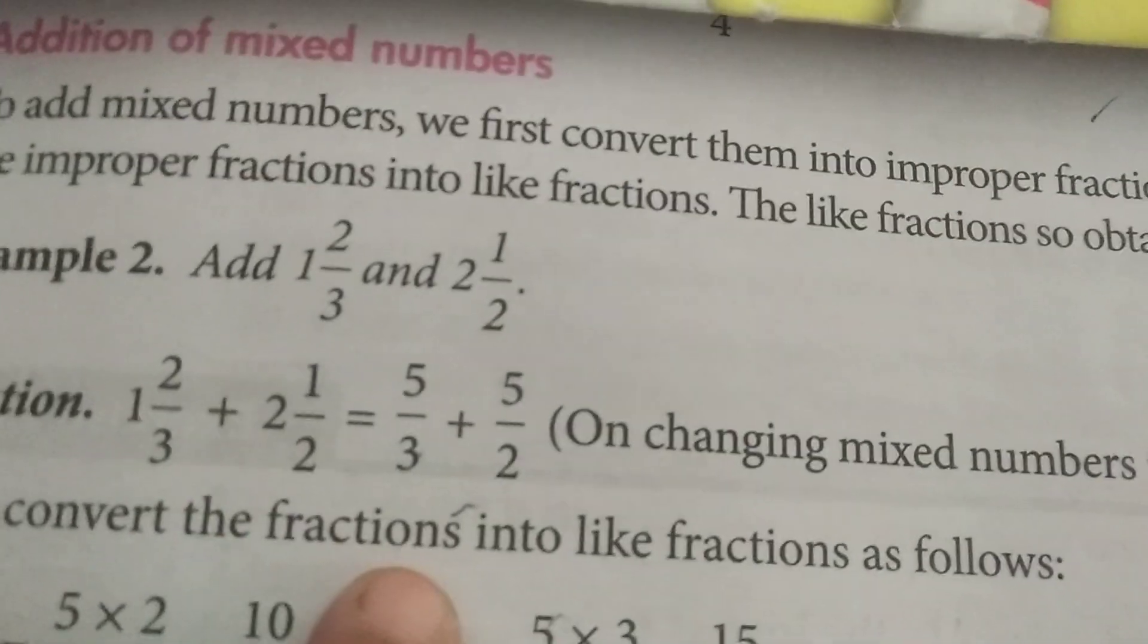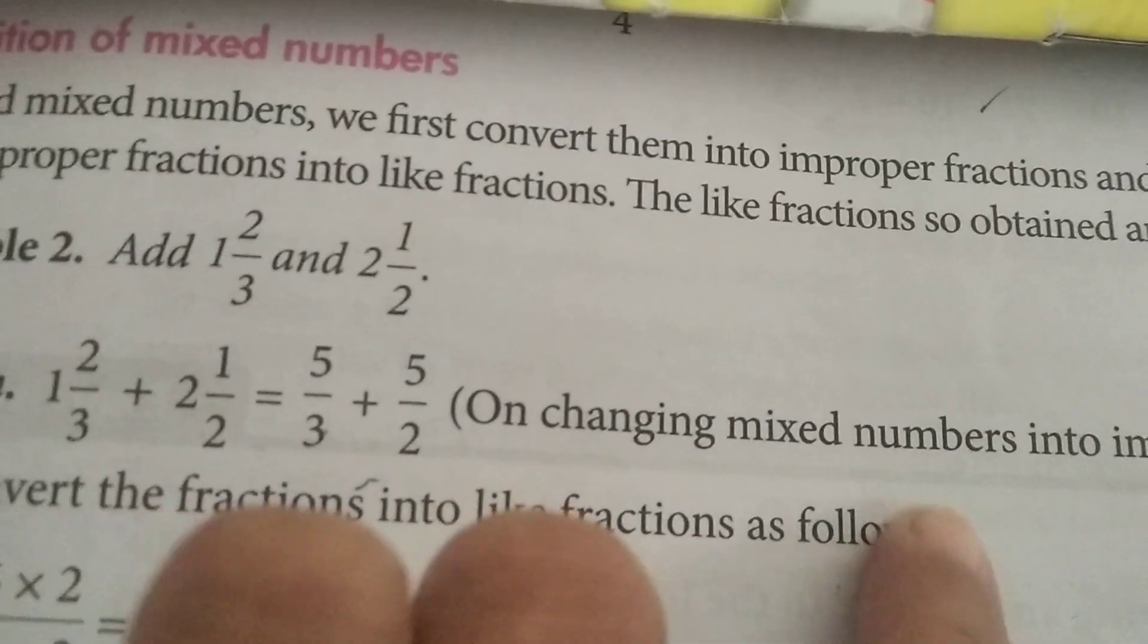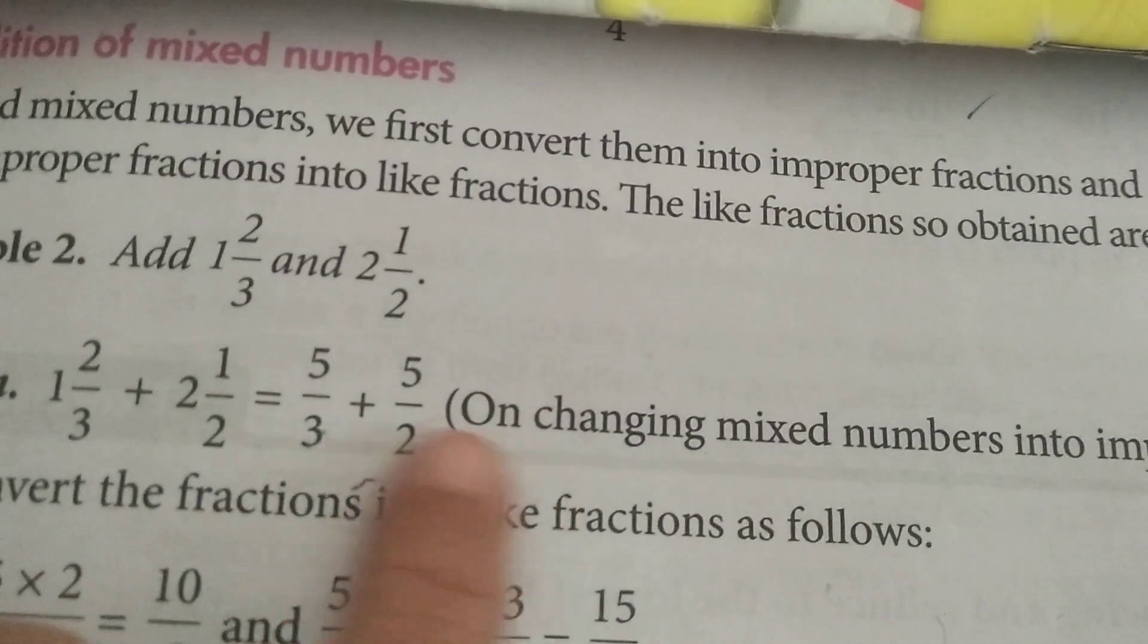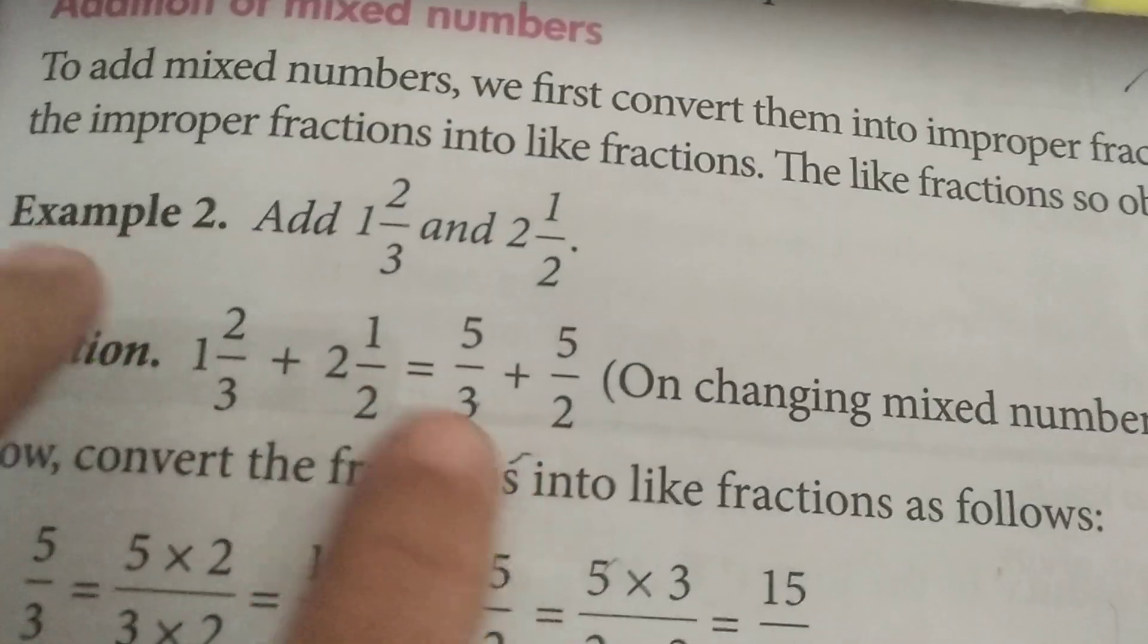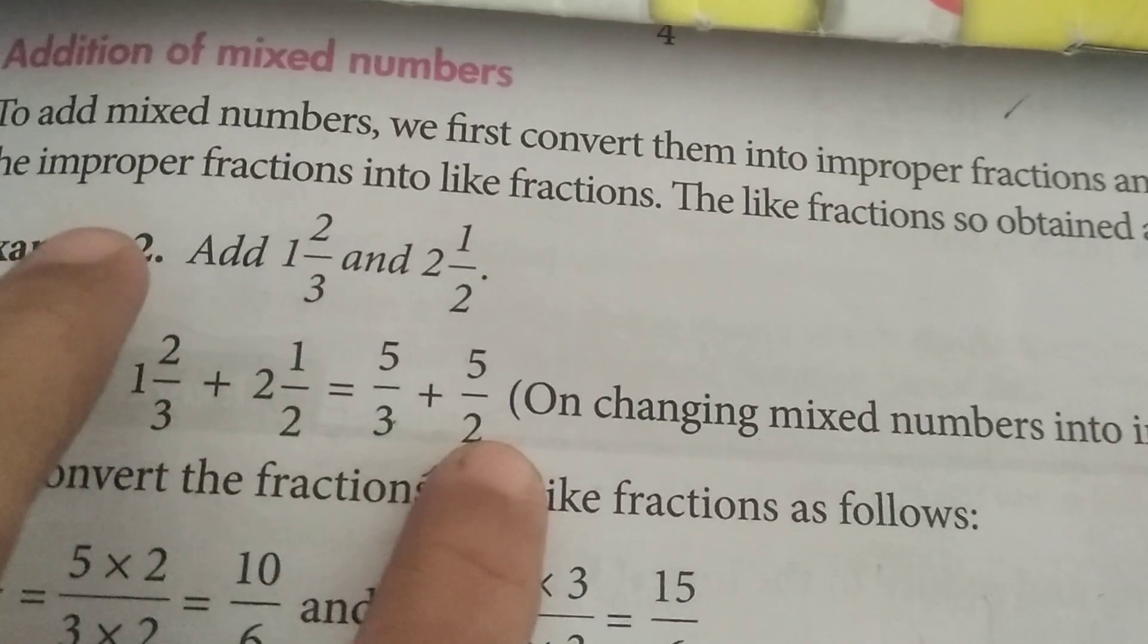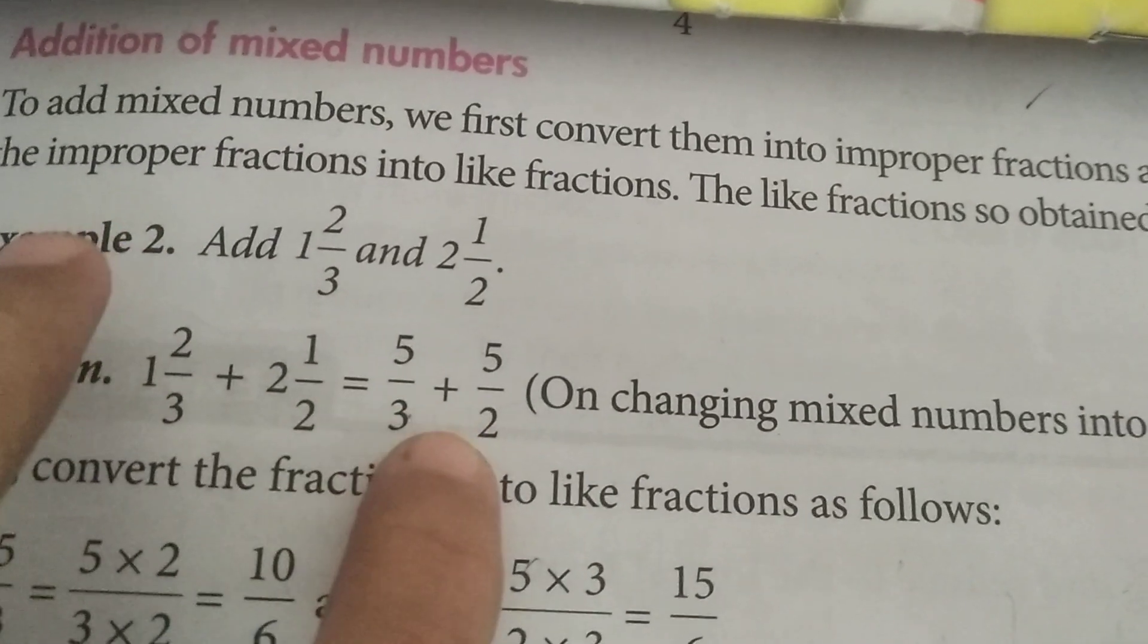Then we have to now convert the fractions into like fractions. We have to convert this improper fraction 5/3 and 5/2. So what we must do, we have to take LCM. For 3 and 2, we get LCM as 6.